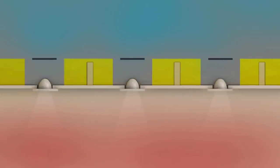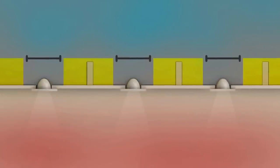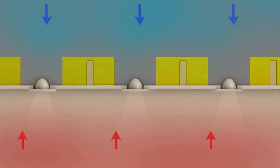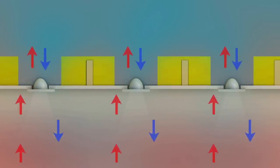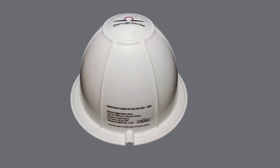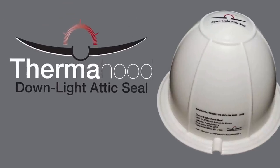As you need to leave a gap in your insulation above each downlight to prevent ceiling fire, the effectiveness of the loft insulation is reduced by up to 30%. Stop this heat and energy loss with the Thermahood downlight attic seal.